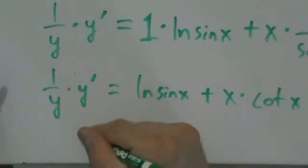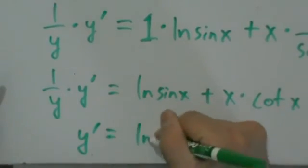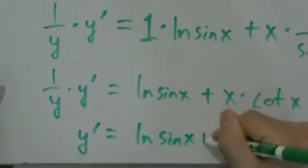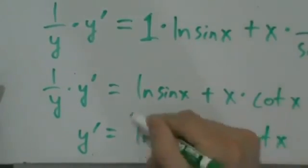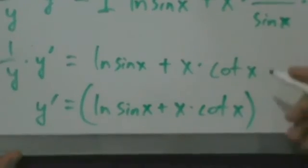Now we just multiply both sides by y, and we have y prime equals natural log of sine of x plus x times cotangent of x, that whole thing multiplied by y.